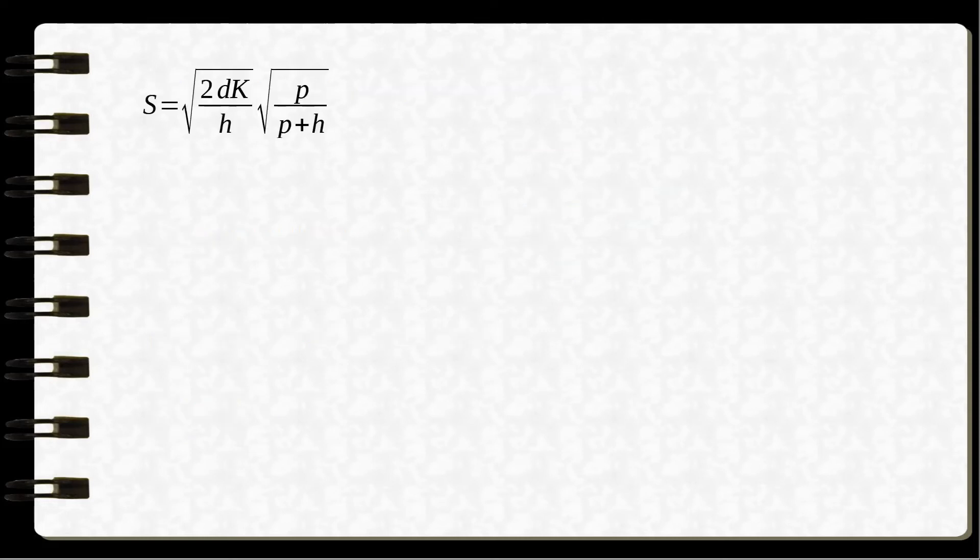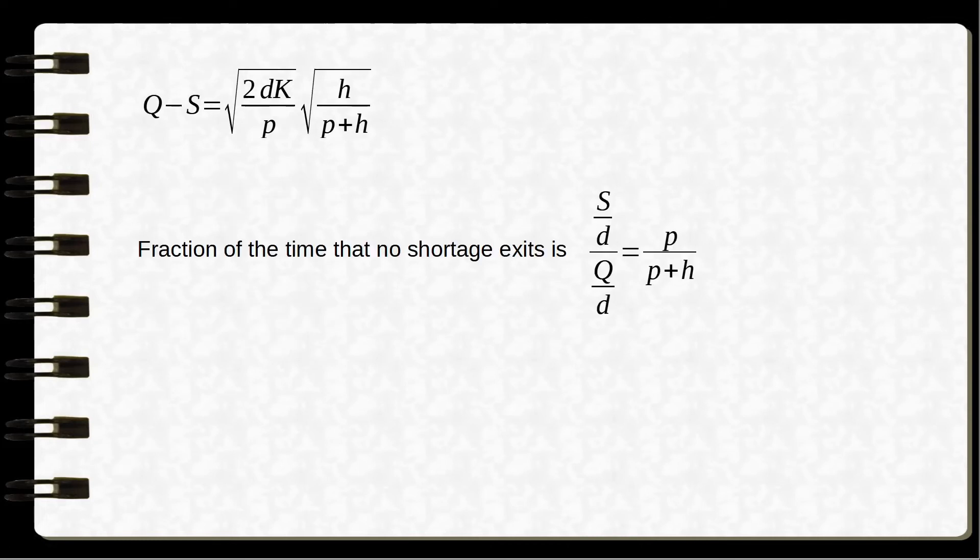So we get S, we also get Q, and we get T. The fraction of the time that no shortage exists is P over P plus H.